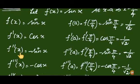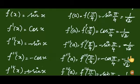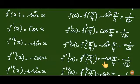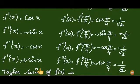f double dash of a is f double dash of pi by 4, which equals minus sin pi by 4, giving minus 1 by root 2. f triple dash of a: f triple dash of pi by 4 is minus cos pi by 4, giving minus 1 by root 2. So sin 45 and cos 45 are all equal to 1 by root 2, with the second and third derivatives carrying a negative sign.